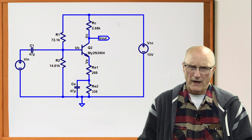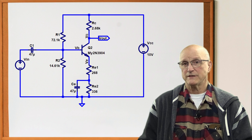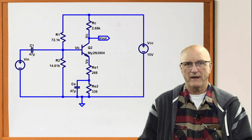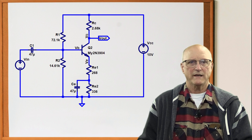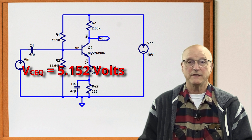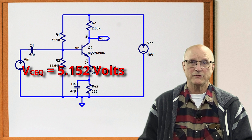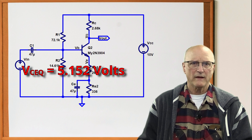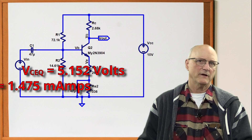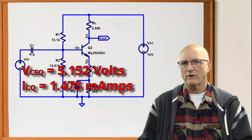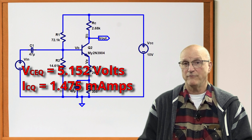I'm not going to go through the circuit analysis here, but here are the numbers for the actual calculated quiescent operating point. The quiescent collector emitter voltage VCEQ is 5.152 volts. The quiescent collector current ICQ is 1.475 milliamps.